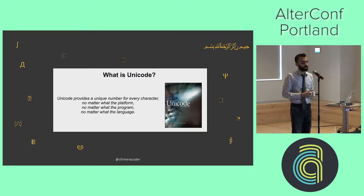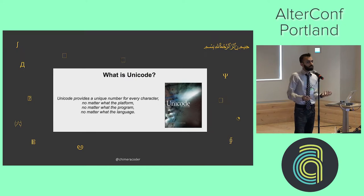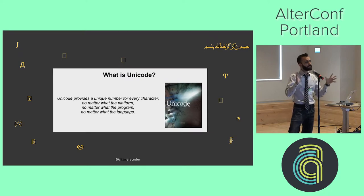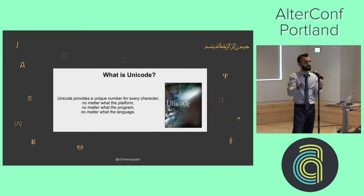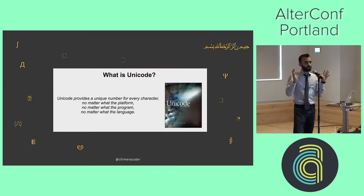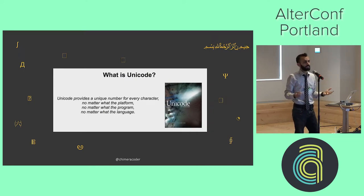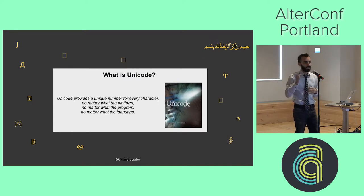Unicode aims to solve this problem by providing a unique number for every character, no matter what the platform, no matter what the program, and no matter what the language. The idea is that if we have a universal character set — a universal mapping that encompasses every single character that's ever been written in humankind — then we can agree on how those numbers map to characters and vice versa, and we'll never have issues where two people are using different sets of mappings. Every character the Unicode Consortium has identified gets its own unique number — its own code point.